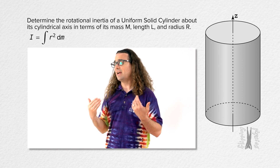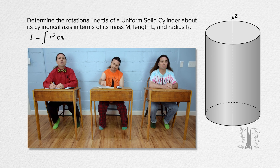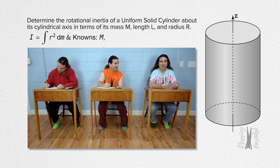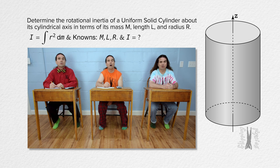Please read and translate the question. Determine the rotational inertia of a uniform solid cylinder about its cylindrical axis in terms of mass M, length L, and radius R. So our knowns are capital M, capital L, and capital R, and we are solving for moment of inertia, so capital I equals question mark.